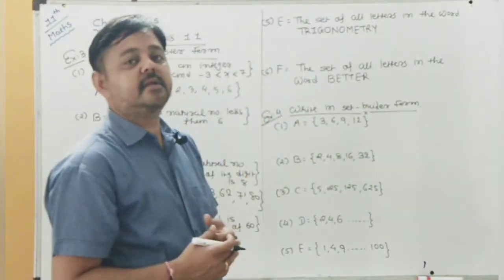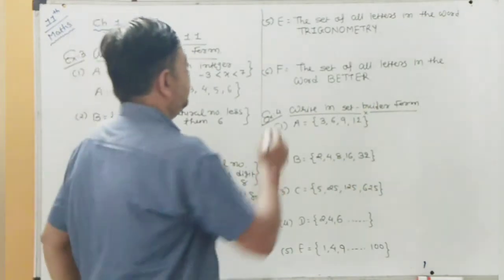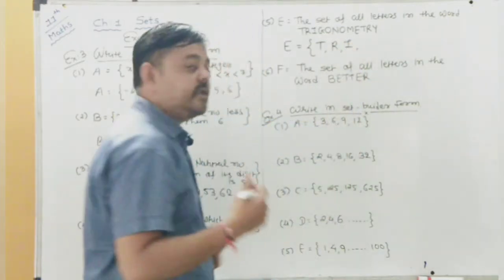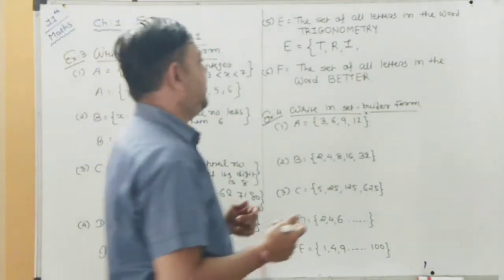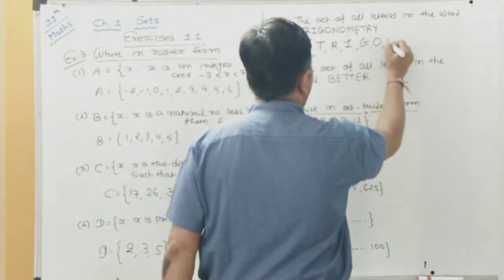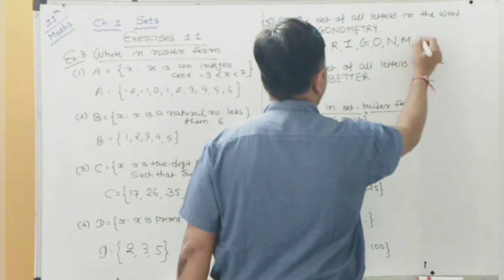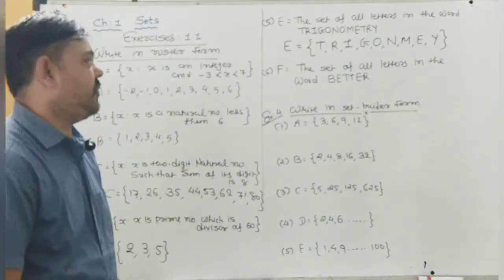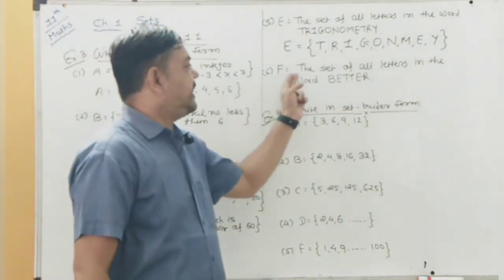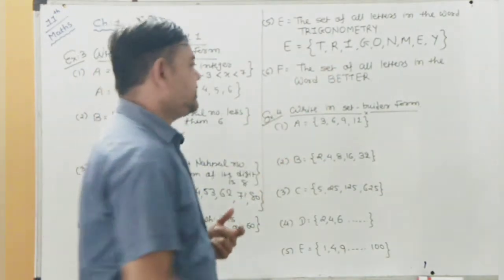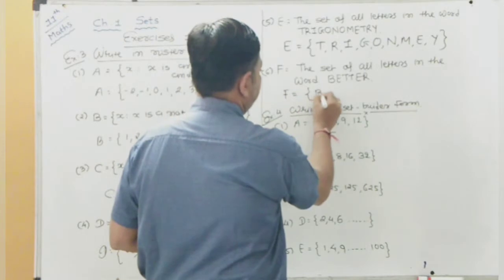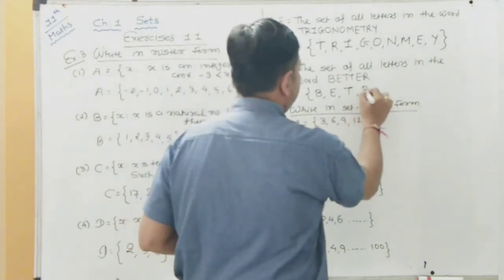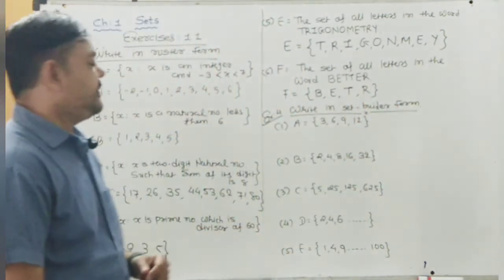Set E = {x : x is a letter in the word TRIGONOMETRY}. In roster form, writing each letter separated by commas: T, R, I, G, O, N, M, E, Y — repeated letters like T, R are not written again. Set F = letters in the word BETTER: B, E, T, R — repeated letters are not included.